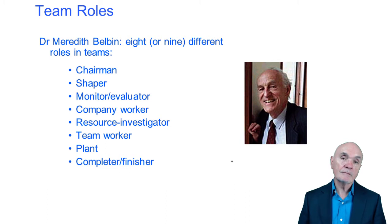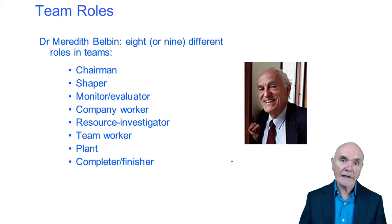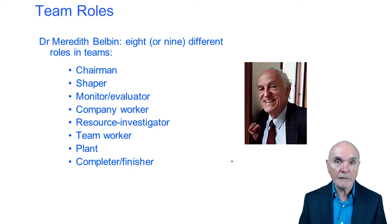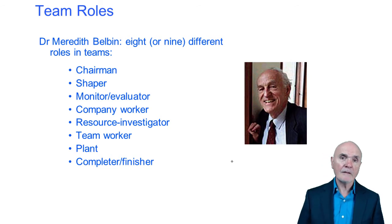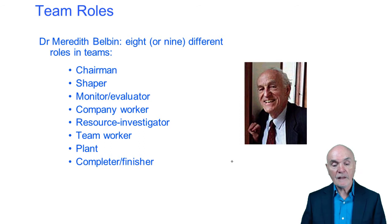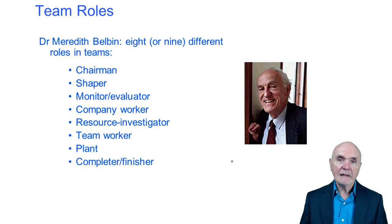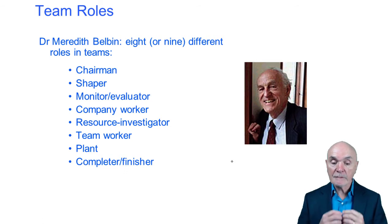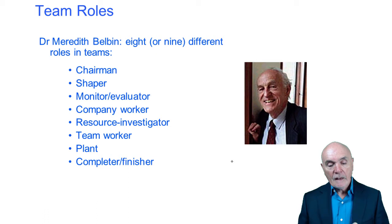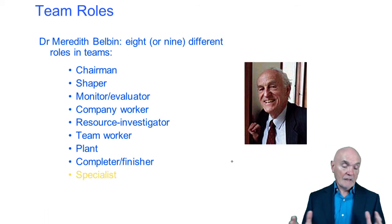The completer finisher is someone who is very good at detail. So if you're getting a report produced for a client, it's a completer finisher who will be very good at making sure all the cross-references are correct, and proofing the document to make sure there aren't any typing errors. This is a role that many other people are not very good at — they get more excited at the start of a project rather than at the end. A plant is someone who is deliberately put into a group to ginger it up — someone who will come out with slightly off-the-wall, outrageous ideas to make the rest of the group think outside the box. He also said there might be one other type: a specialist.